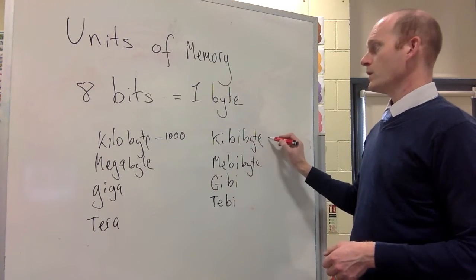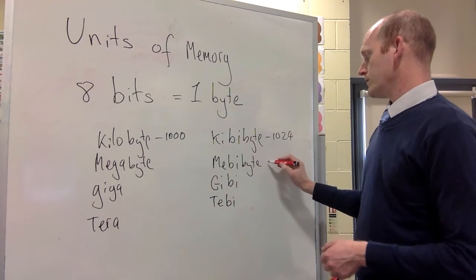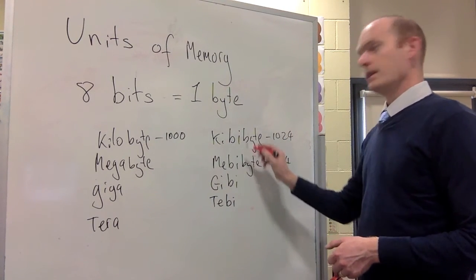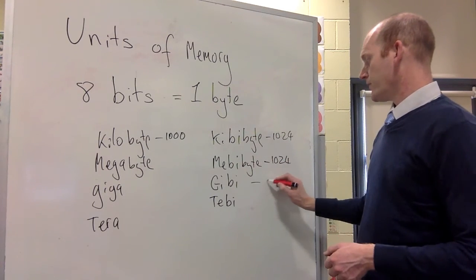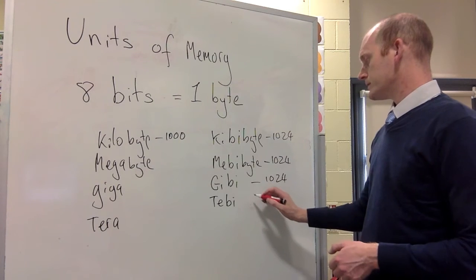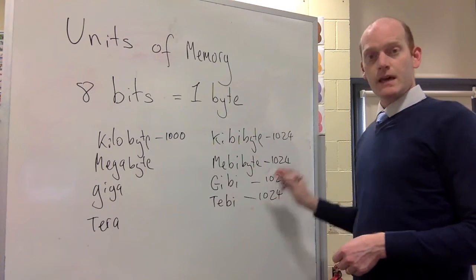These, this is 1,024 bytes. This is 1,024 kilobytes. This is 1,024 megabytes, or mebibytes. And this is 1,024 tebibytes.